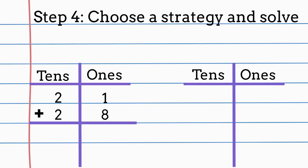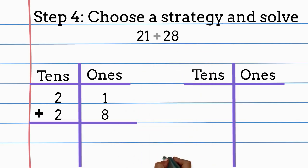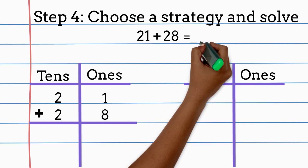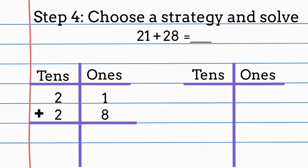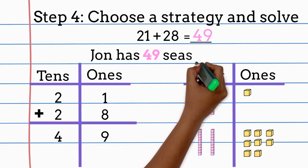I know this because in the first part of my word problem, I found out that John had 21 seashells after he gave some to his sister, and now he found 28 more. I will need to add these numbers together to find out how many seashells John has now. I'm going to use the same strategy as before. I'm going to model both numbers because John had 21 seashells and he's getting 28 more, so I need to add both together. First, I'll start with my ones place, then I will add my tens place. I can see that John has 49 seashells now.